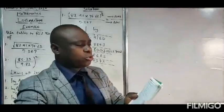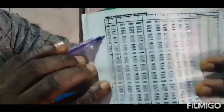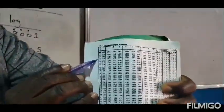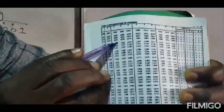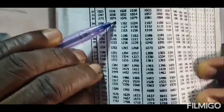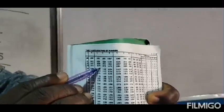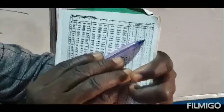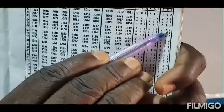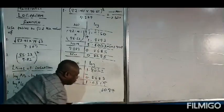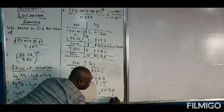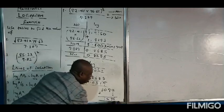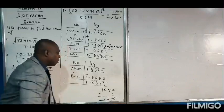We go to our anti-log table at the row where we have 0.03. The next digit after 0.03 is 1, so we move over to column 1. Reading 0.03 on column 1 gives us 1074. The next digit is 7, so we move over to difference column 7 on that same row — that gives 2. We add: 1074 plus 2 gives 1076.